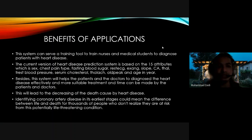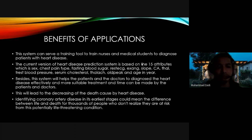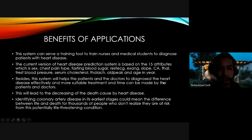The current version of the heart disease prediction system is based on 15 attributes: SETS, chest pain type, fasting blood sugar, RESTEC, adzang, slope, CA, TAL, transplant pressure, serum cholesterol, TALAS, ORPIC, and HIN area. This system will help patients and doctors to diagnose heart disease effectively, enabling more suitable treatment and timely decisions by patients and doctors. This will lead to a decrease in deaths caused by heart disease.